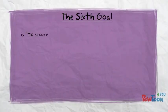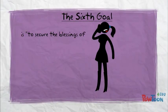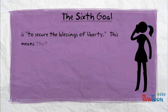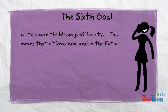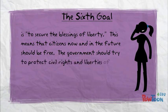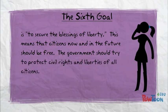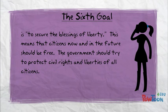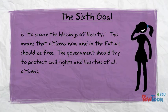The sixth goal is to secure the blessings of liberty. This means that the citizens, now and in the future, should be free. The government should try to protect the civil rights and liberties of all citizens of the United States.